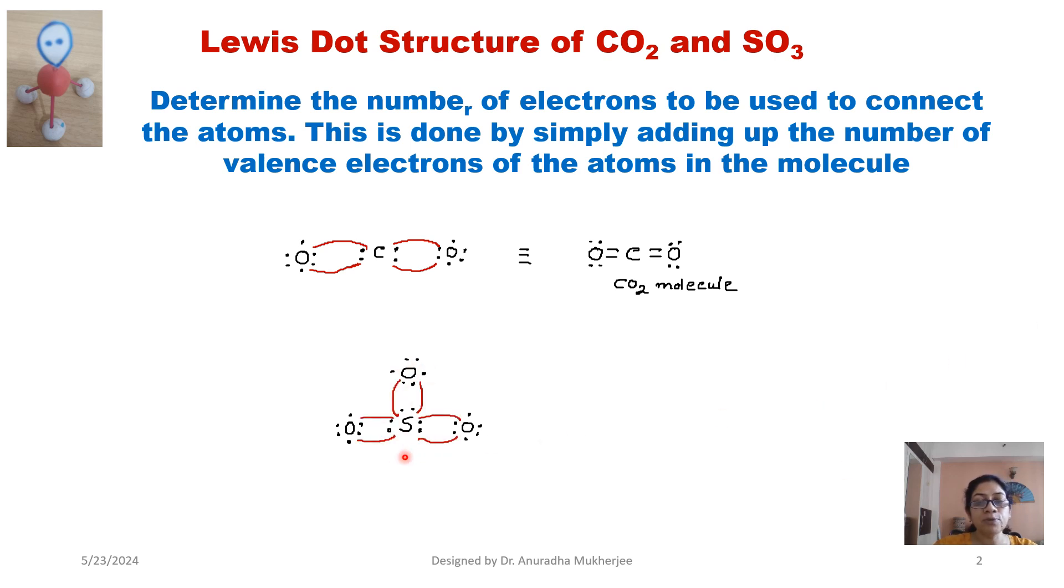But here if we look into the sulfur valence electrons, it is more than octet: 1, 2, 3, 4, 5, 6, 7, 8, 9, 10, 11, 12. That means sulfur has 12 valence electrons. It is called the expanded octet.